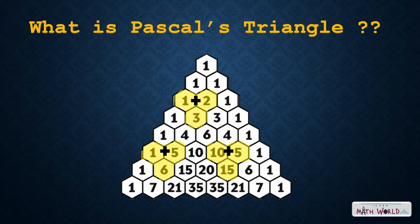For example, the fourth row of Pascal's Triangle is 1, 3, 3, 1. These are the coefficients in the expansion of (x + y) to the third power.